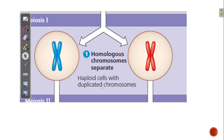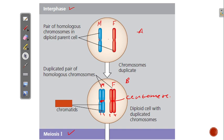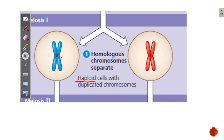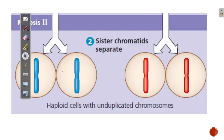During meiosis I, the homologous pairs split and go into different cells. The cell becomes haploid. After meiosis I, each cell has one chromosome but that chromosome contains two chromatids. After meiosis II, those chromatids are split, creating four haploid cells — one chromosome in each — that are genetically different.